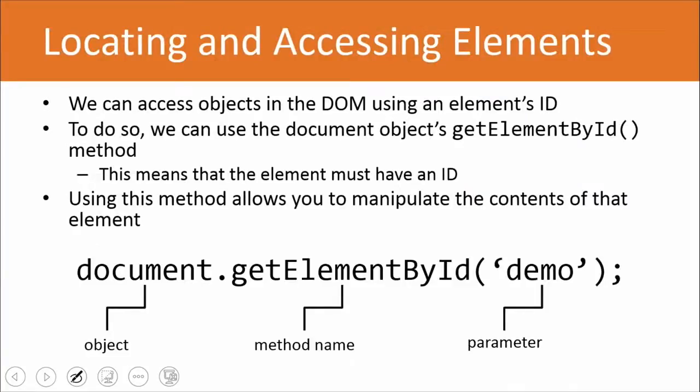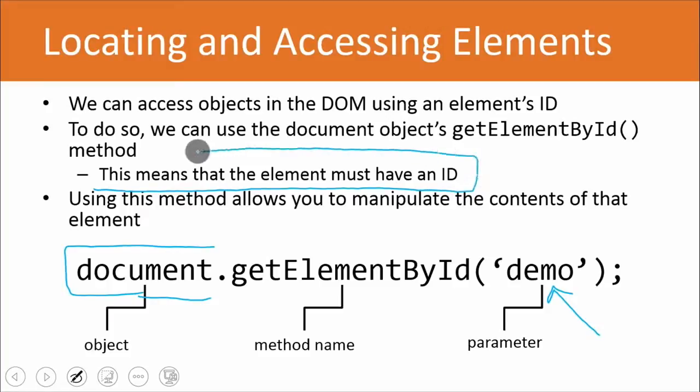All right. So we can locate and access these elements by using the getElementById method. And this is something that's definitely going to be tested on the exam. We access the document object. We make reference to it. We use the getElementById method for the document object. And then we add in the parameter here of demo. And demo is actually going to be a specific element's ID. And this means, of course, that the element must have an ID or else this won't work and we can't access it. We use this method to go ahead and manipulate the contents of it. And so let's go ahead and take a look at that in action.